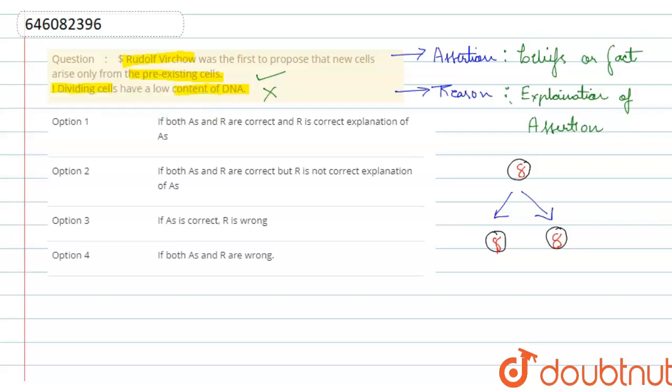Let's check the options. In the first option, it is said that if both assertion and reason are correct and the reason is the correct explanation of the assertion. No, the reason is not correct, even it is not a correct explanation of the assertion.